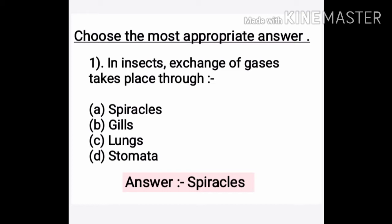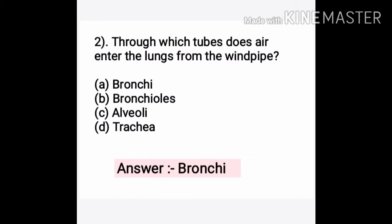First question: In insects, exchange of gases takes place through which organ? Options: A. Spiracles, B. Gills, C. Lungs, D. Stomata. The correct answer is A. Spiracles — that is where exchange of gases takes place in insects. Gills are used in fishes, lungs in human beings, and stomata in plants.